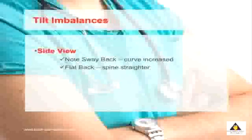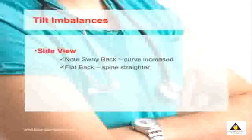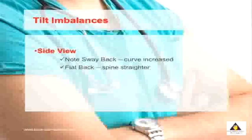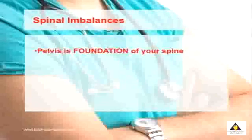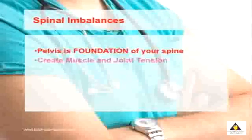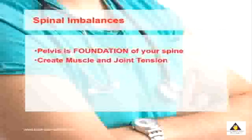You can also look at the side view of your posture, which detects what's called a tilt-type imbalance, where you can have a sway back — where the curve in your lower back is much greater — or you may have a flattened spine. The pelvis is the foundation of your spine, and imbalances centered around here can create pain throughout your spine, causing both muscle and joint tension.